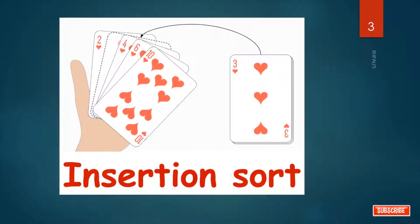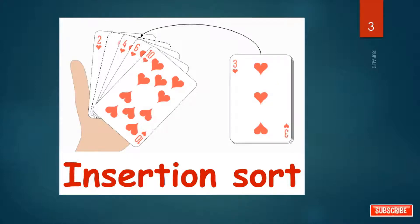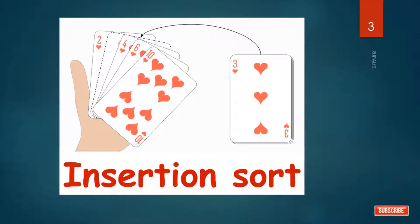Insertion sort works similarly to how we sort cards in a card game. Imagine being handed one card at a time. You take the first card in your hand, then you sort the second card to the left or right of it. The third card is placed to the left, in between, or to the right depending on its size. All the following cards are placed in the right position. A similar approach is used by insertion sort.